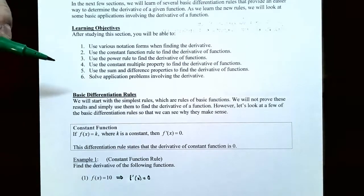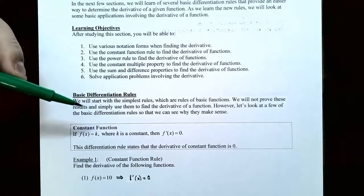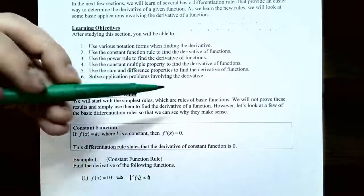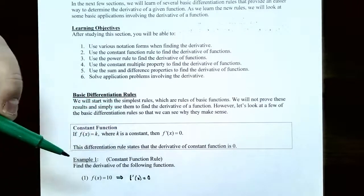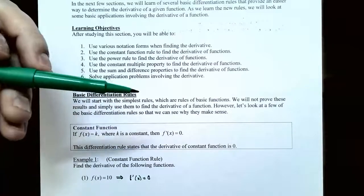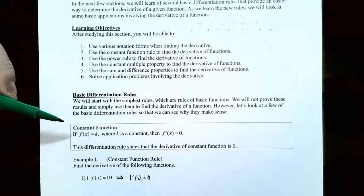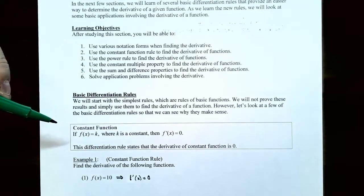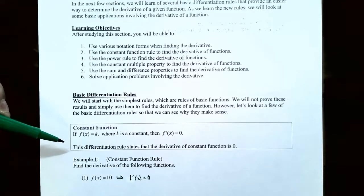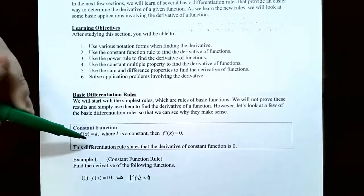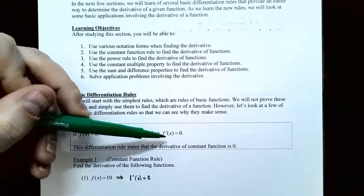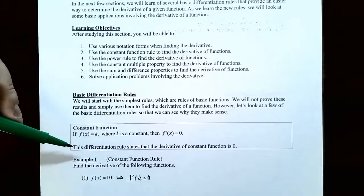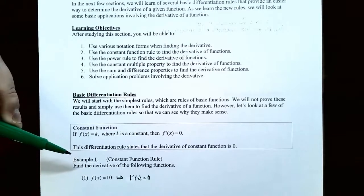So let's talk about basic differentiation rules. We're going to start off with the simplest rule, which is called the constant function rule. We're not going to prove these results — we're going to simply use these differentiation rules to find the derivative of a function without using the limit of the difference quotient every single time. We're going to look at a few differentiation rules so that we can see why they make sense. This is for constant functions, so your function is just a constant real number. If f of x equals k and k is a constant or a real number, the derivative f prime of x is always equal to zero. This differentiation rule states that the derivative of a constant function is zero, and we saw that in the previous section.